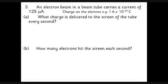The last one, which is the trickiest: An electron beam in a cathode ray tube carries a current of 125 μA. What charge is delivered to the screen of the tube every second? Well, 125 microamps means 125 microcoulombs of charge per second. You can formalize that as Q = I×t, so the charge is the current of 125 microamps times one second, which gives you 1.25 × 10⁻⁴ coulombs.